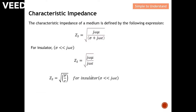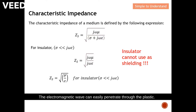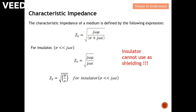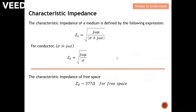However, we cannot use an insulator as a shield. Insulators such as plastic are actually transparent to electromagnetic waves — the electromagnetic wave can easily penetrate through plastic. Therefore, we cannot use any insulator for shielding; we can only use a good conductor, which I will explain next.